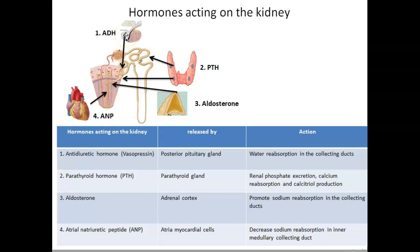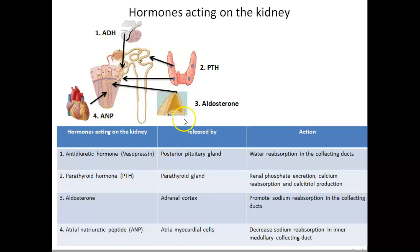The first hormone that acts on the kidney is antidiuretic hormone, also called vasopressin. Vasopressin is produced by the hypothalamus and secreted by the posterior pituitary gland. The action of antidiuretic hormone is on the last part of the nephron, within the collecting tubule, and the major action is water retention or water reabsorption.